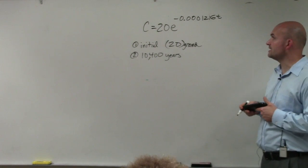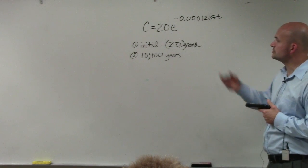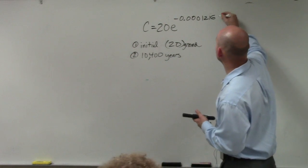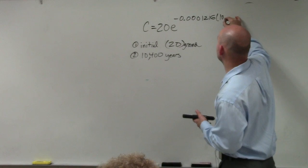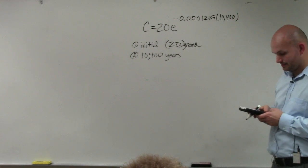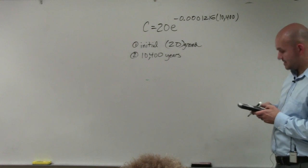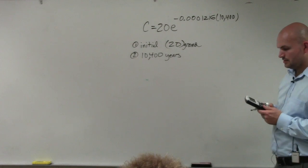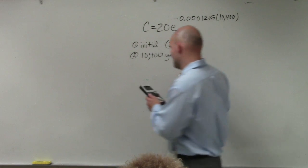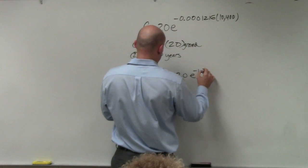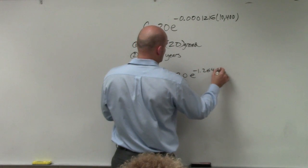Now the next thing that they're looking for us to do is determine how much is going to be left in 10,400 years. So basically, what I'm going to do is put in T. I'm going to put in 10,400. So in your calculator, you have to type that in. So it'd be 10,400 times negative 0.1231216. And then so I have carbon equals 20 times E to the negative 1.26464.